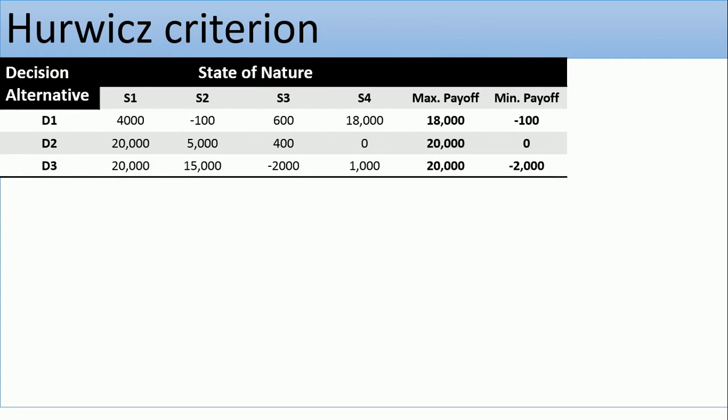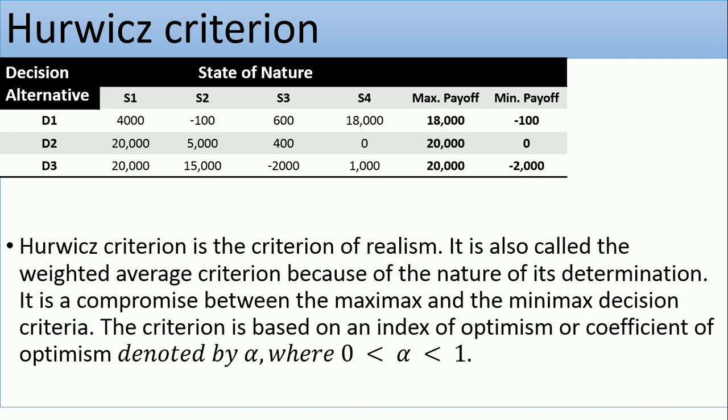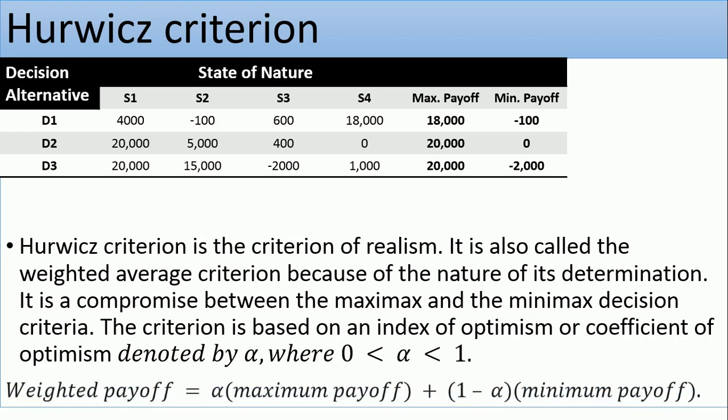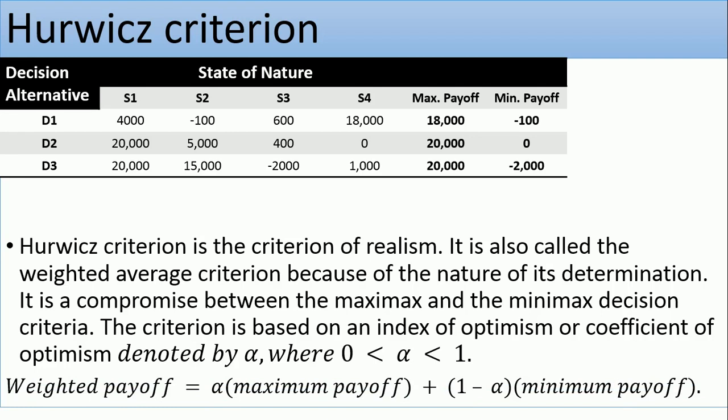The Hurwicz criterion requires the use of a weighted average payoff formula. It is a criterion of realism, also called the weighted average criterion. It is a compromise between the maximax and the maximin decision criteria, and is based on the index of optimism or coefficient of optimism denoted by alpha, where alpha lies strictly between zero and one. To apply the Hurwicz criterion, you need the formula: weighted payoff = alpha × (maximum payoff) + (1 - alpha) × (minimum payoff).